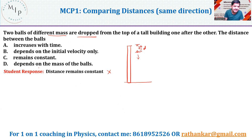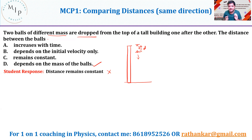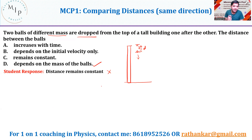Some students also answered that it depends upon the mass of the balls, saying one mass is larger so it falls faster. But they are point masses, and the time of fall does not depend upon the mass — it depends only on the height of the object. Galileo's experiments from the Leaning Tower of Pisa also confirmed the same thing. So the distance does not depend on mass, not on initial velocity — and saying it remains constant is also incorrect.